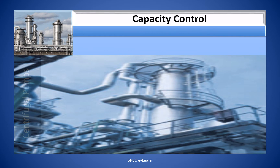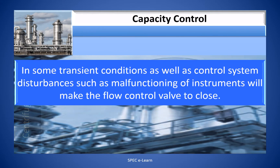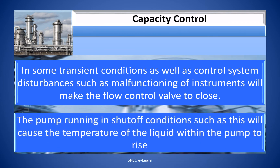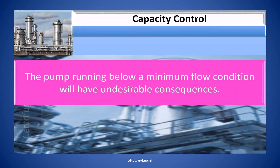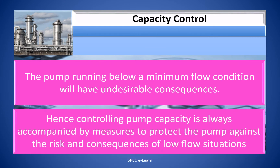Some transient conditions as well as control system disturbances, such as malfunctioning of instruments, will cause the flow control valve to close. The pump running in shutoff condition will cause the temperature of the liquid within the pump to rise. The pump running below the minimum flow condition will have undesirable consequences. Hence, controlling pump capacity is always accompanied by measures to protect the pump against the risk and consequences of low flow situations.